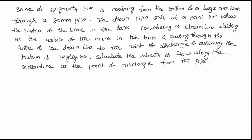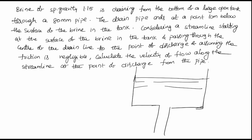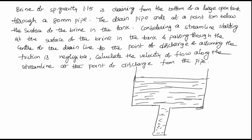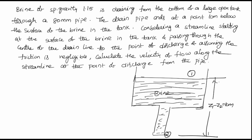So first of all there is a tank, and at the bottom there is a pipe connected. This is the pipe, and the tank is filled with brine solution — brine solution is a salt solution used mainly to preserve pickles and fruits. We consider two sections: section 1 is at the top surface and section 2 is at the end of the pipe. The height difference between these two, z1 minus z2, is given as 10 meters.